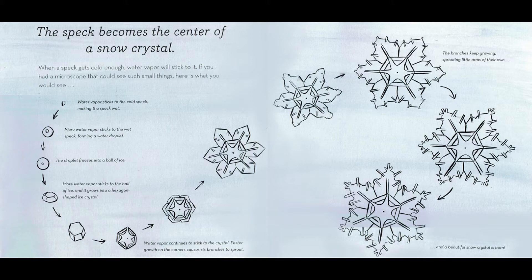The speck becomes the center of a snow crystal. When a speck gets cold enough, water vapor will stick to it. Water vapor sticks to the cold speck, making the speck wet. More water vapor sticks to the wet speck, forming a water droplet. The droplet freezes into a ball of ice. More water vapor sticks to the ball of ice, and it grows into a hexagon-shaped ice crystal. Water vapor continues to stick to the crystal. Faster growth on the corners causes six branches to sprout. The branches keep growing, sprouting little arms of their own, and a beautiful snow crystal is born.